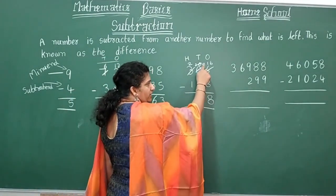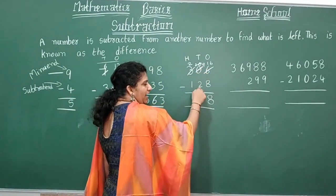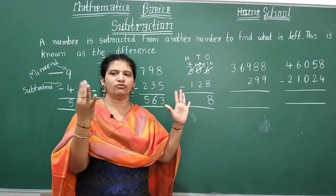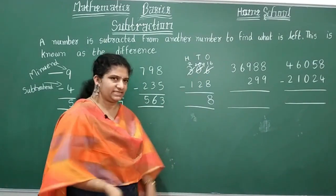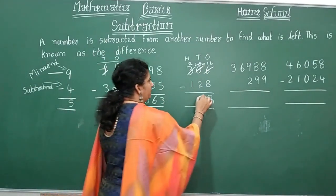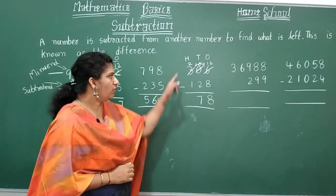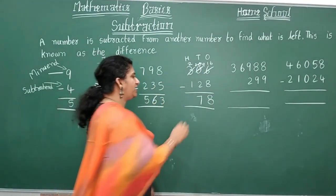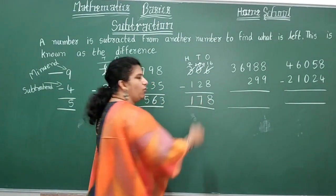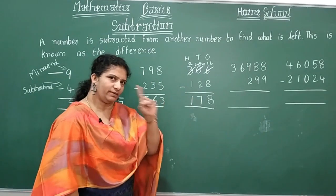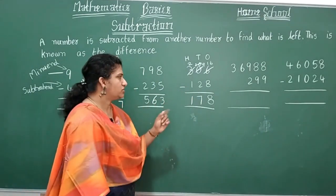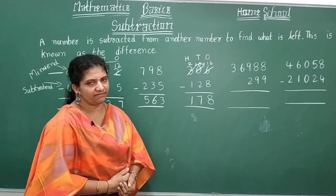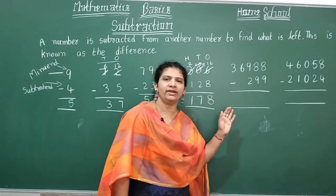Continuing with 306 minus 128: in the tens place, nine minus two equals seven. In the hundreds place, two minus one equals one. So the difference is one hundred seventy-eight, that is 178.